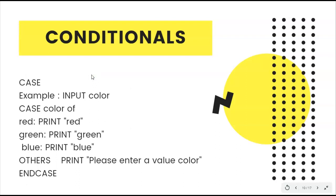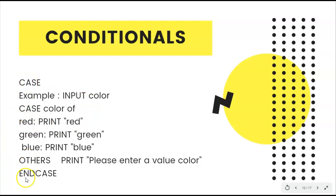For CASE statements — similar to switch-case in Java, C++, or C# — you take an input, for example color. CASE color OF: if red, print 'red'; if green, print 'green'; if blue, print 'blue'; otherwise print 'please enter a proper value'. Then close with END CASE. You take the input, validate against each case — red, green, blue — and handle the default with OTHERS.